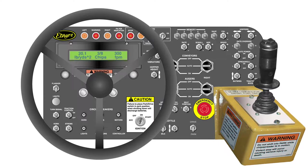Once the chip spreader is in motion, the actual speed is displayed. The speed feedback is generated by a magnetic sensor mounted to the motor output shaft, which generates pulses that the computer displays as feet per minute.